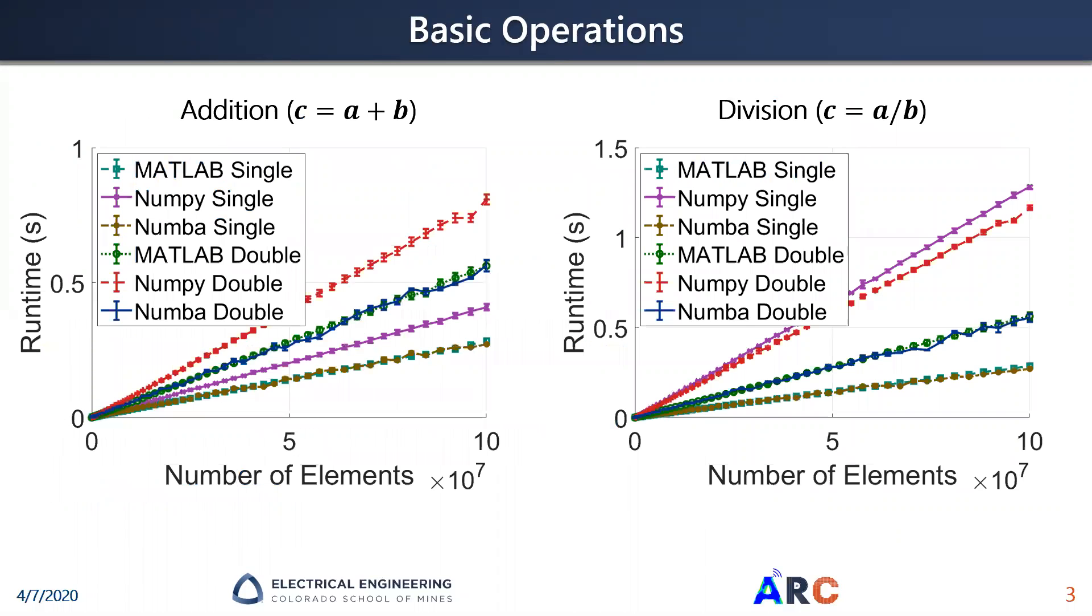First off, we can look at some very basic operations. This includes division, subtraction, addition, and multiplication. On the left, you can see we have addition. We use a couple of libraries here in Python. We have the Numba library along with the NumPy library, and then we have our MATLAB implementation. As we can see, the Numba library performs right on par with the way MATLAB performs for all the different sizes, or all the different number of elements in our problem, but NumPy is still slower.